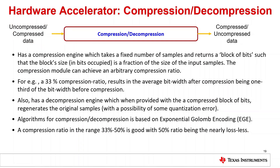The compression path: the compression engine can perform compression or decompression of data in the exponential Golomb encoder format. For the compression path, it takes as input a fixed number of samples and returns a block of bits that is a fraction of the input samples. For example, a 33% compression ratio results in the average bit width after compression being one third of the bit width before compression. Decompression does the opposite with the possibility of some quantization error. A compression ratio in the range of 33% to 50% gives good results; 50% is nearly lossless while 33% is more lossy and usable for range bins that are further away.